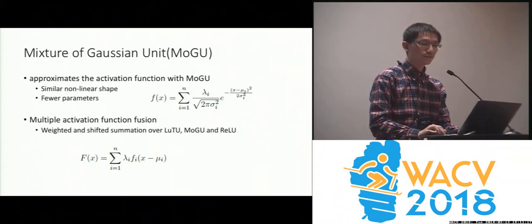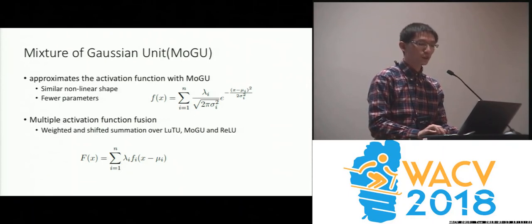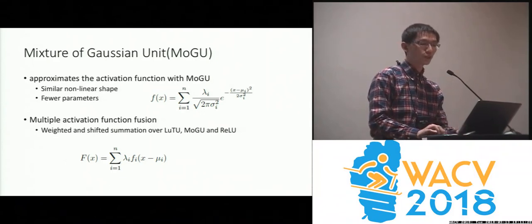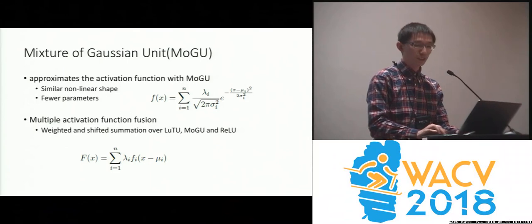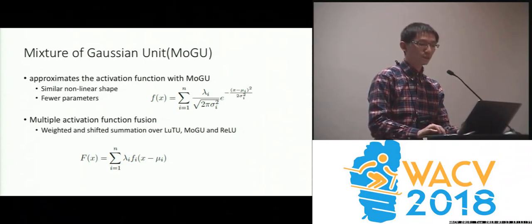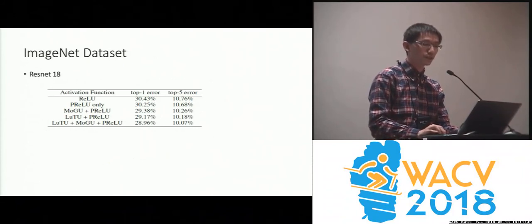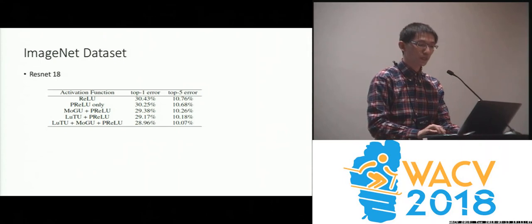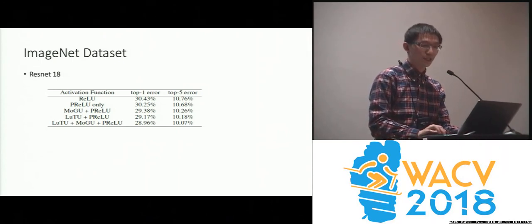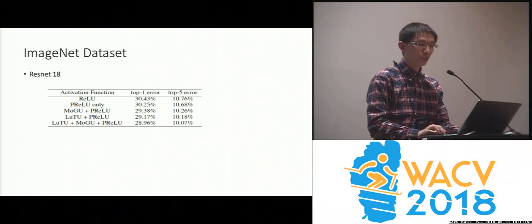To further boost performance, we adopt a multiple activation function fusion scheme, which is similar to multiple kernel fusion in SVM. In this framework, we build the final activation function as a weighted sum of the shifted input types of functions. Comparing the Mixture of Gaussian and the fusion method: although the Mixture of Gaussian method has much fewer parameters than the lookup table method, it achieves similar results. When we combine them together, we can further improve the performance.